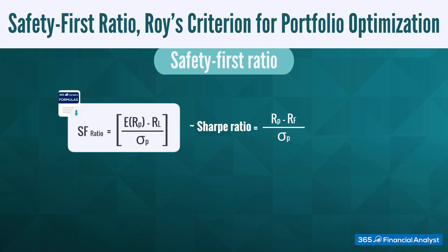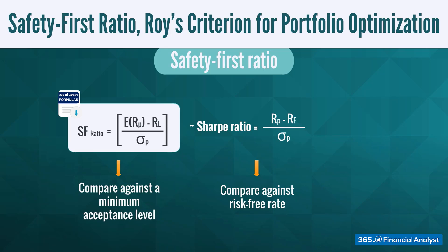When calculating the Sharpe ratio, we compare against the risk-free rate. Whereas when applying the safety first ratio, we are interested in seeing the portfolio performance against a minimum acceptable level, under which we don't want to fall.